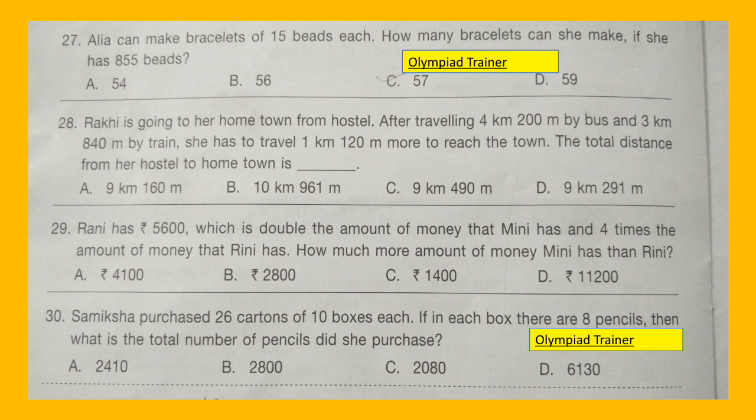Question 28: Rakhi is going to her hometown from hostel. After travelling 4 km 200 m by bus and 3 km 840 m by train, she has to travel 1 km 120 m more to reach the town. The total distance from her hostel to hometown is dash.